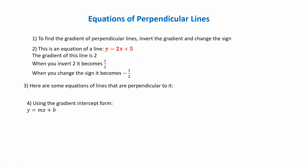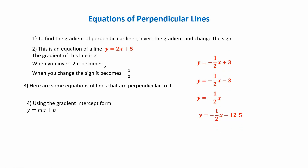Using the form y equals mx plus b: y equals minus a half x plus 3 is perpendicular to that line. Also y equals minus a half x minus 3, y equals minus a half x, y equals minus a half x minus 12.5, and y equals minus a half x plus 7. All of those lines are perpendicular, or at right angles, to y equals 2x plus 5.